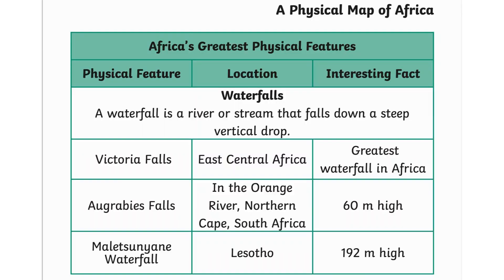A waterfall is a river or stream that falls down a steep vertical drop. Victoria Falls in east-central Africa is the greatest waterfall in Africa. The Augrabies Falls on the Orange River in the Northern Cape, South Africa, is 60 meters high.